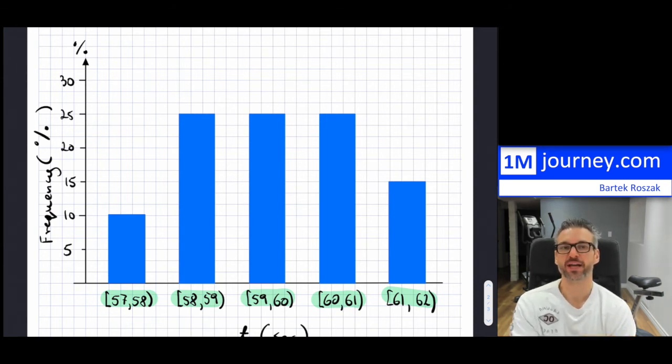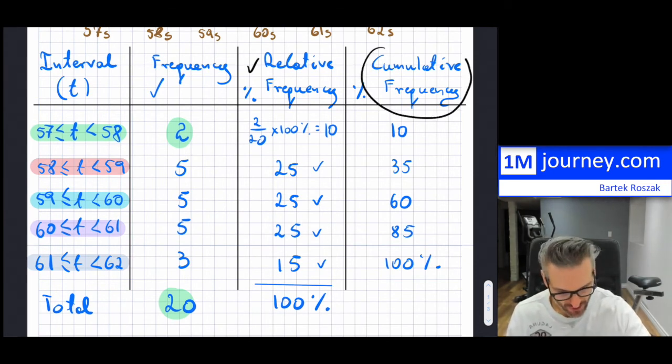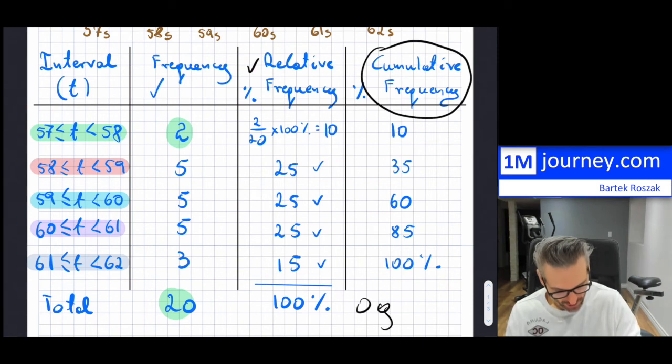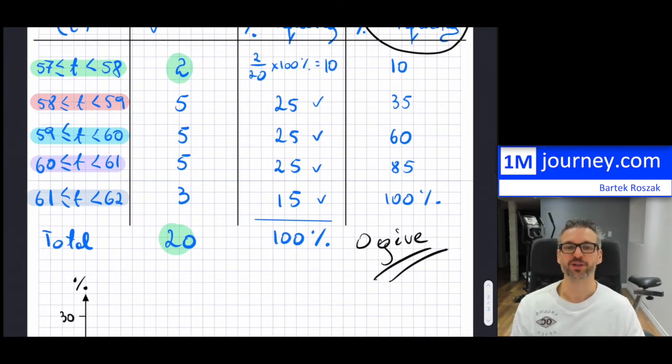The last one that we do is we do a cumulative frequency histogram. So instead of putting this one, we're going to be concentrating on that. And that is called an ogive. That's another term that sometimes is used and thrown around. So let me construct this one, and then you'll see how this is done. We do not use bars at all. We're going to be using something a little bit different. So let me do that in fast forward motion.